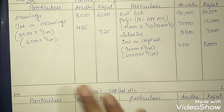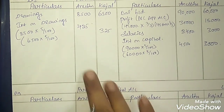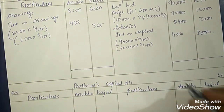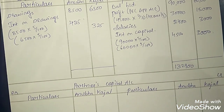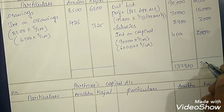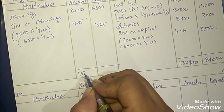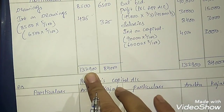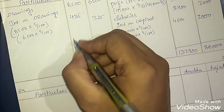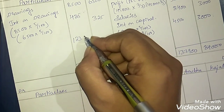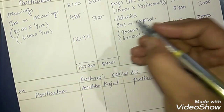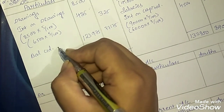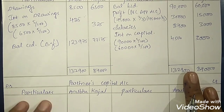Total both amount columns and check which side is bigger — credit side is bigger. Total for Anubha is Rs. 1,32,900 and for Kajal is Rs. 84,000. Write the same amount on both sides: 1,32,900 and 84,000. The balancing figure — balance carried down — is Rs. 1,23,975 for Anubha and Rs. 77,175 for Kajal. This is how we prepare the capital account in the fluctuating method.